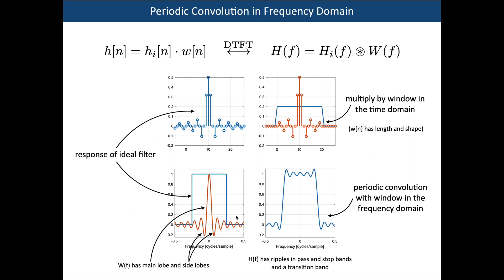The ideal filter has an infinitely sharp transition from the pass band to the stop band, whereas the practical filter has a finite transition band — a band of frequencies over which we transition from the pass band edge to the start of the stop band. These are effects we just have to live with when dealing with finite length filters.